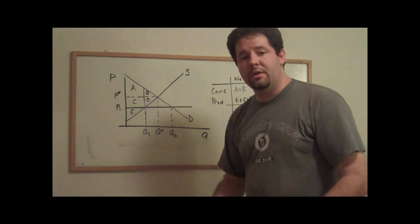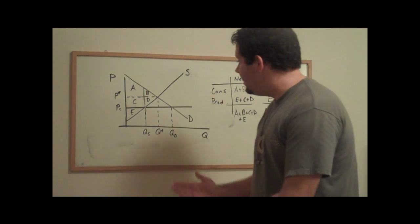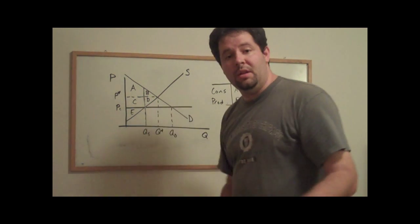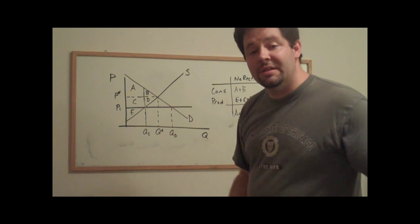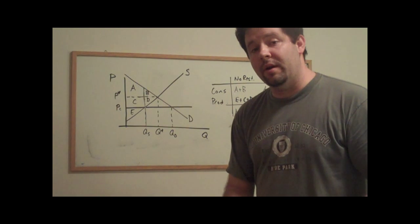Those are units that are no longer traded because it's no longer worth supplying them, but the marginal cost was below the marginal willingness to pay of some consumers. So those units should have been traded, but they went untraded.